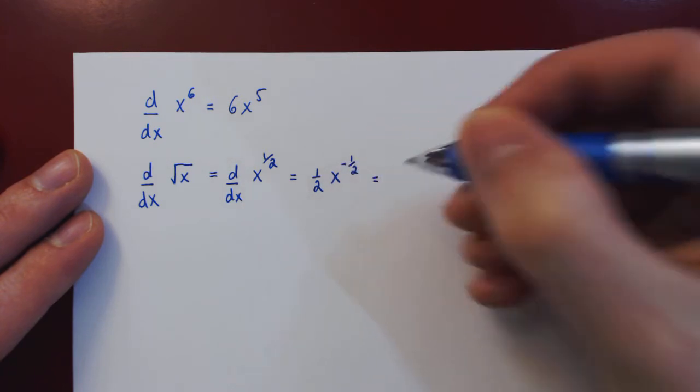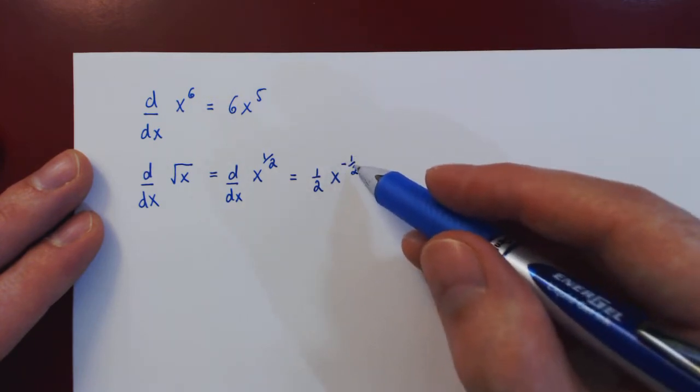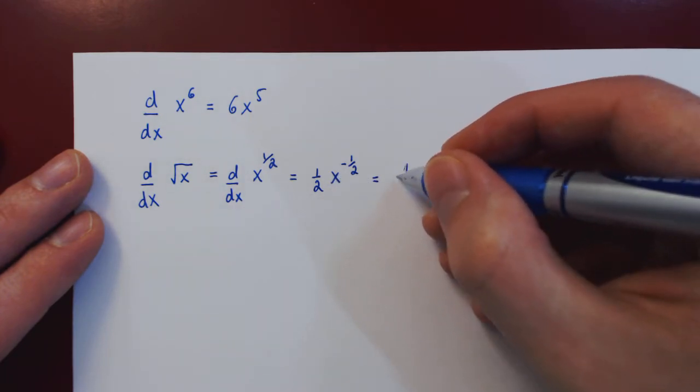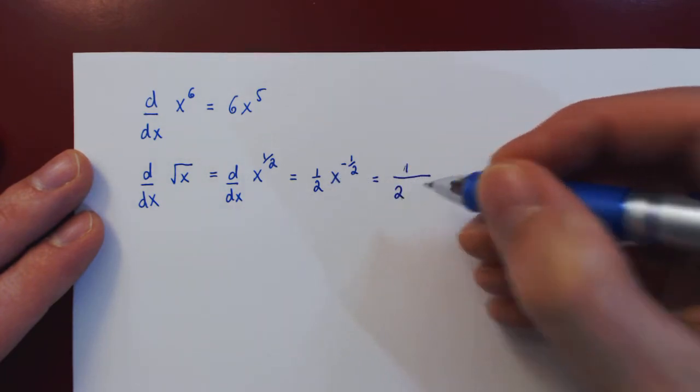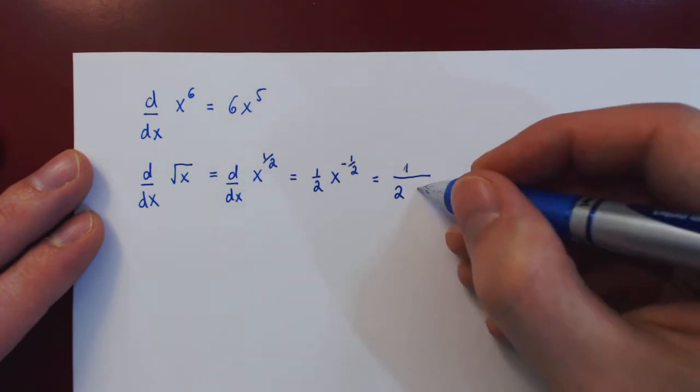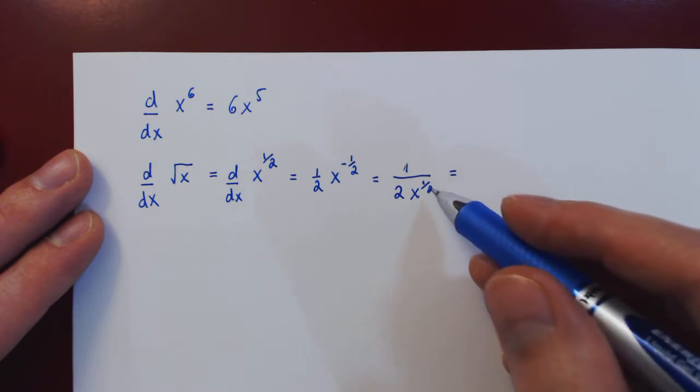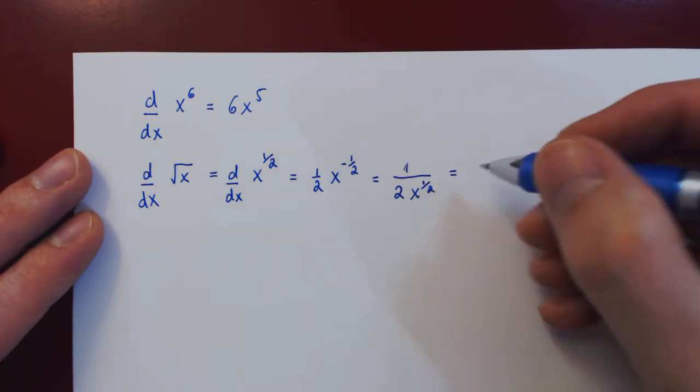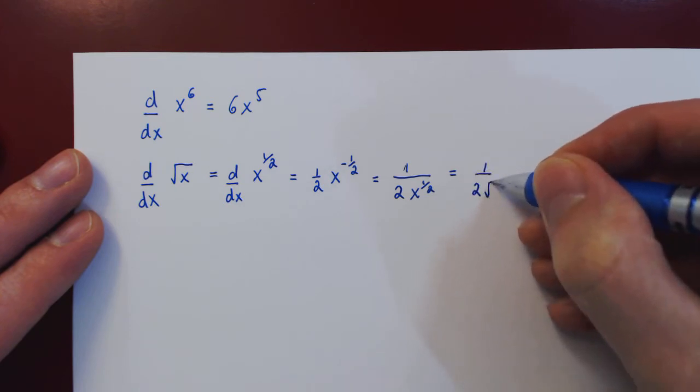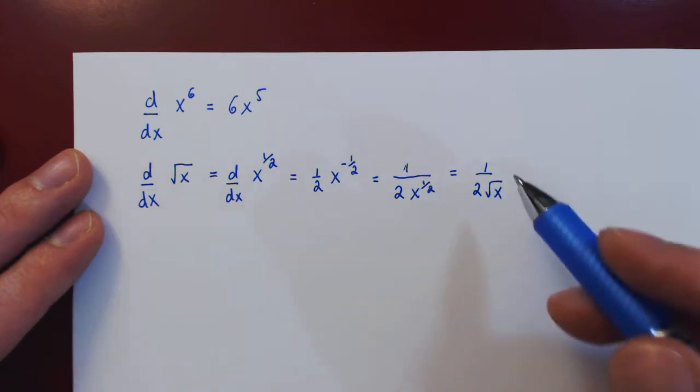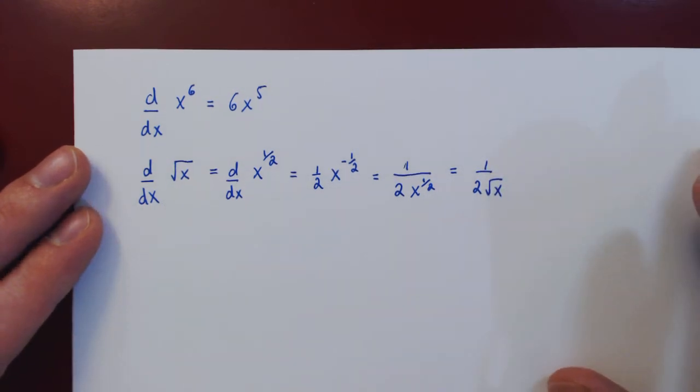If we wanted to have a positive exponent, we can then send x down to the denominator, and we have on the denominator 2 times x to the positive 1 half, and we can now recover the familiar square root. x to the 1 half is the same as root of x, and so we have that the derivative of root of x with respect to x is 1 over 2 root of x.